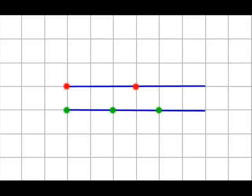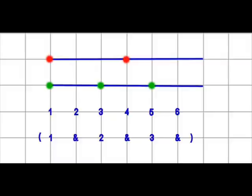Now we're going to put the two lines together in one picture. Notice how the notes fit together. To clarify this, let's add the counting numbers one through six. Notice where we play the notes: on counts one, three, four, and five.